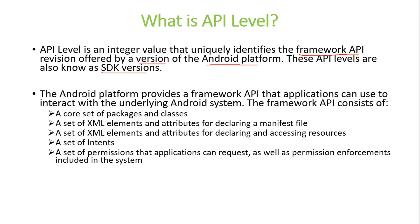The Android platform provides a framework API that applications use to interact with the underlying Android system. The framework API may consist of a core set of packages and classes, a set of XML elements and attributes for declaring a manifest file, for declaring and accessing resources, a set of intents, and a set of permissions that applications can request as well as permission enforcements included in the system.